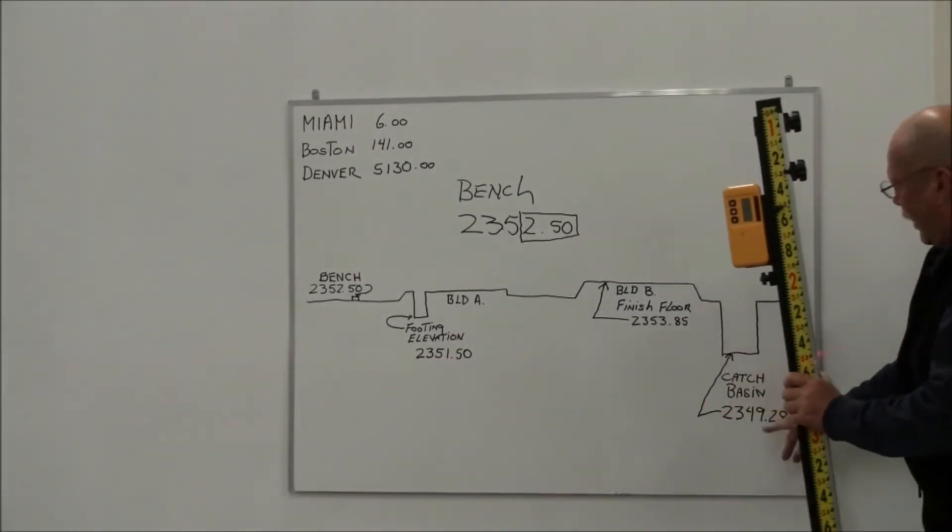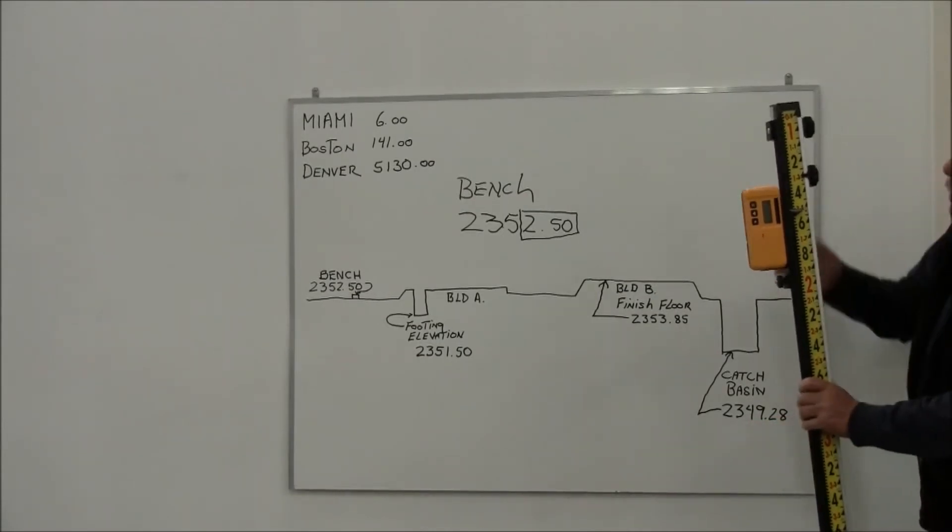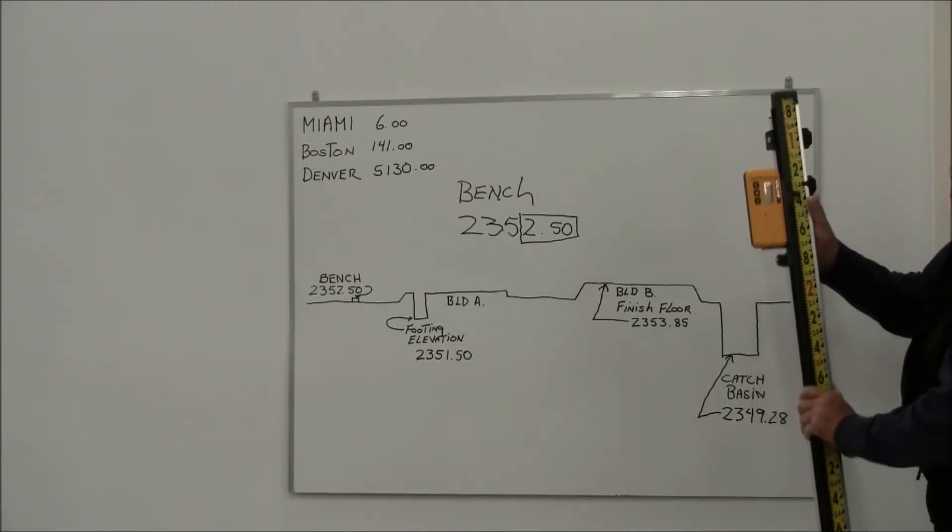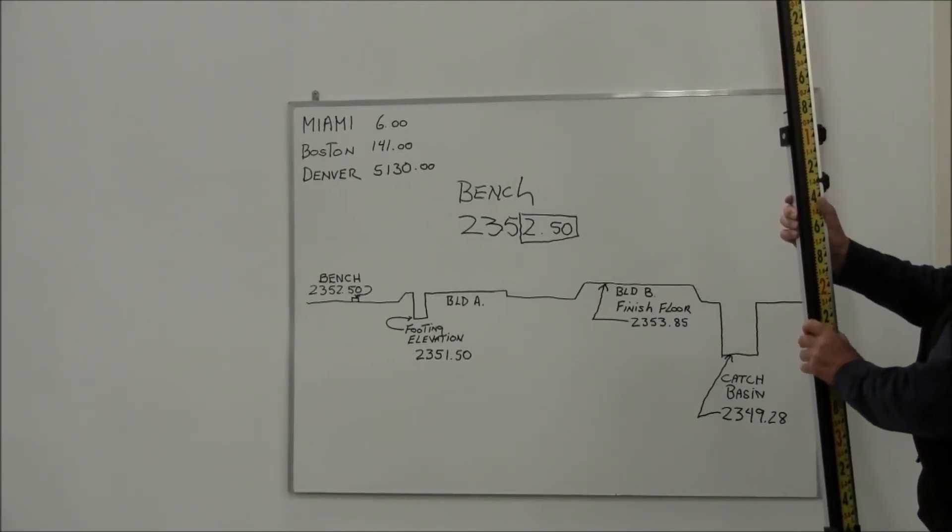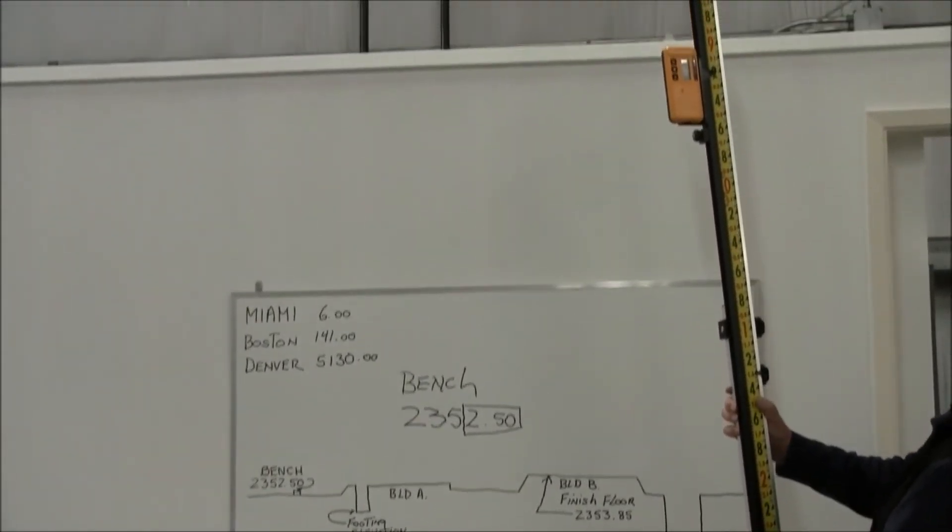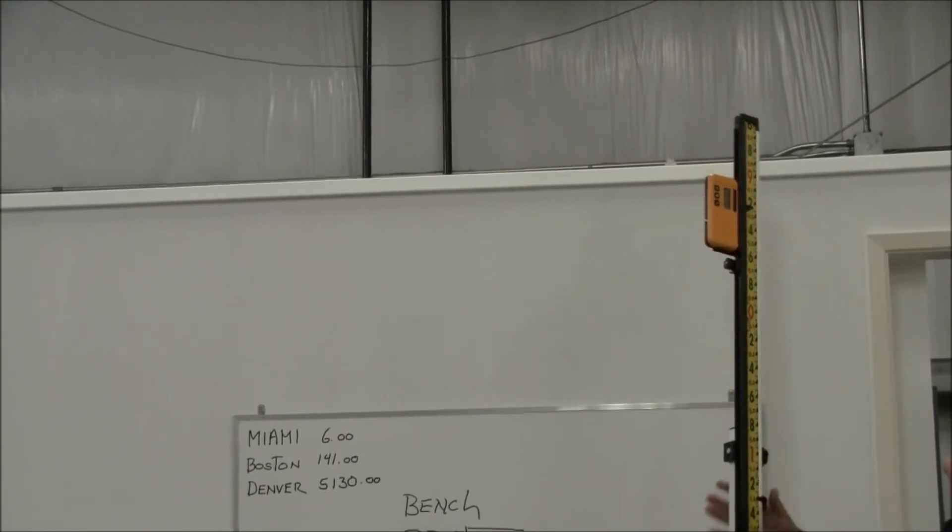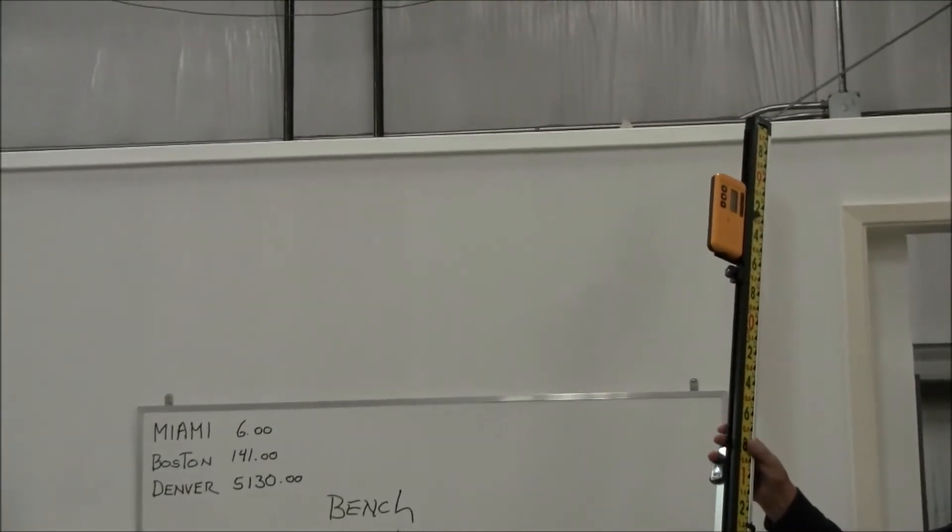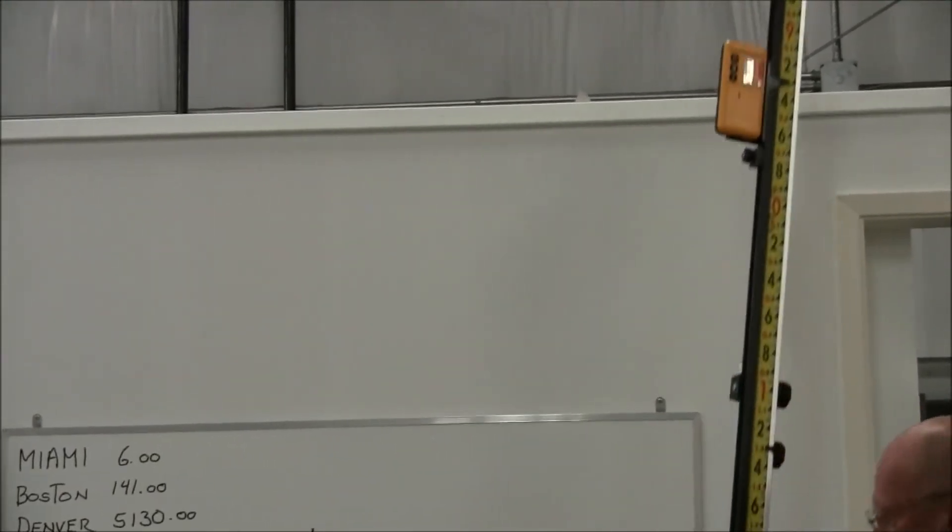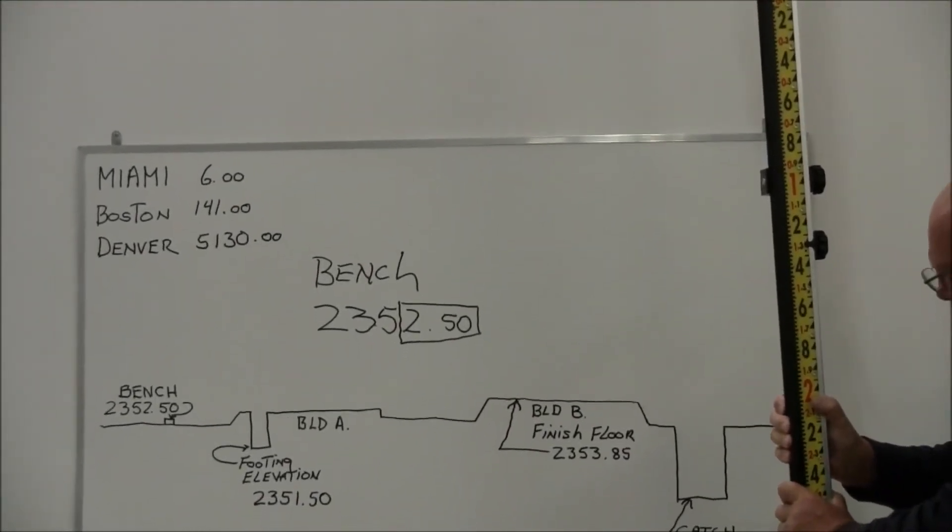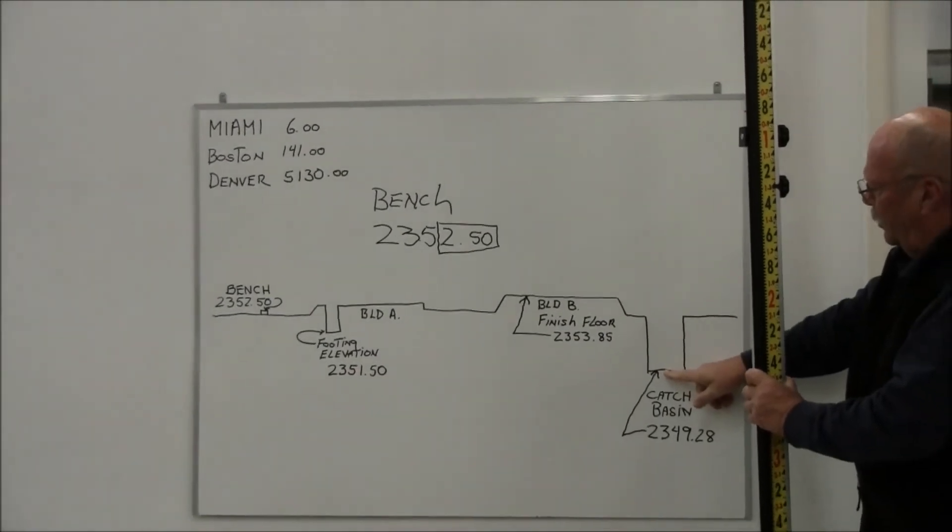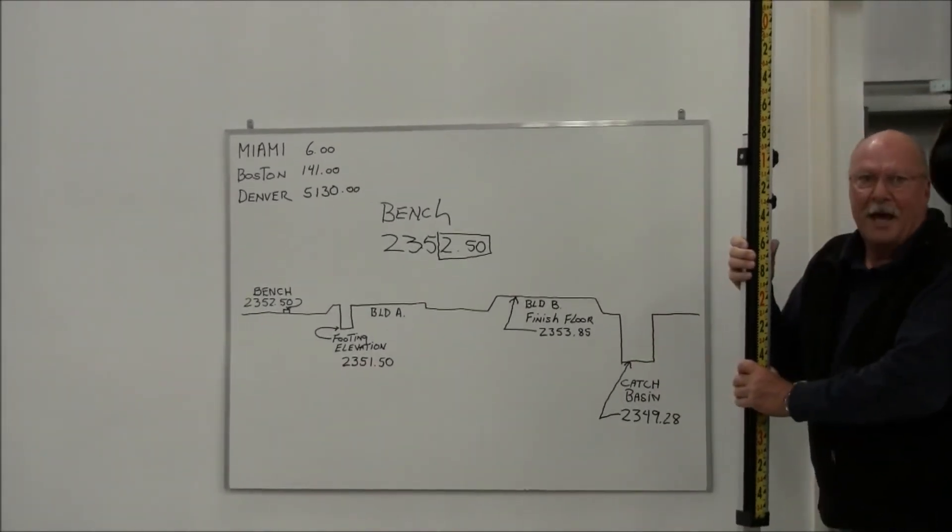Same thing with the catch basin. 2,349.28. What I would do is run the rod to 9.28, there's 9, 25, 28 right there. So as I dig down, when I pick up the steady tone and the bottom of my rod is at that point, I'm at that elevation.